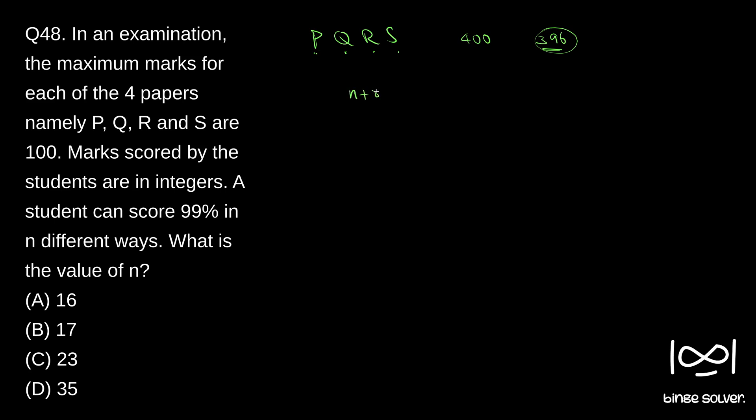Combination with repetition formula is N plus R minus 1 C R. Here N equal to 4 and R equal to 4. So that means 4 plus 4, 8 minus 1, 7 C 4.